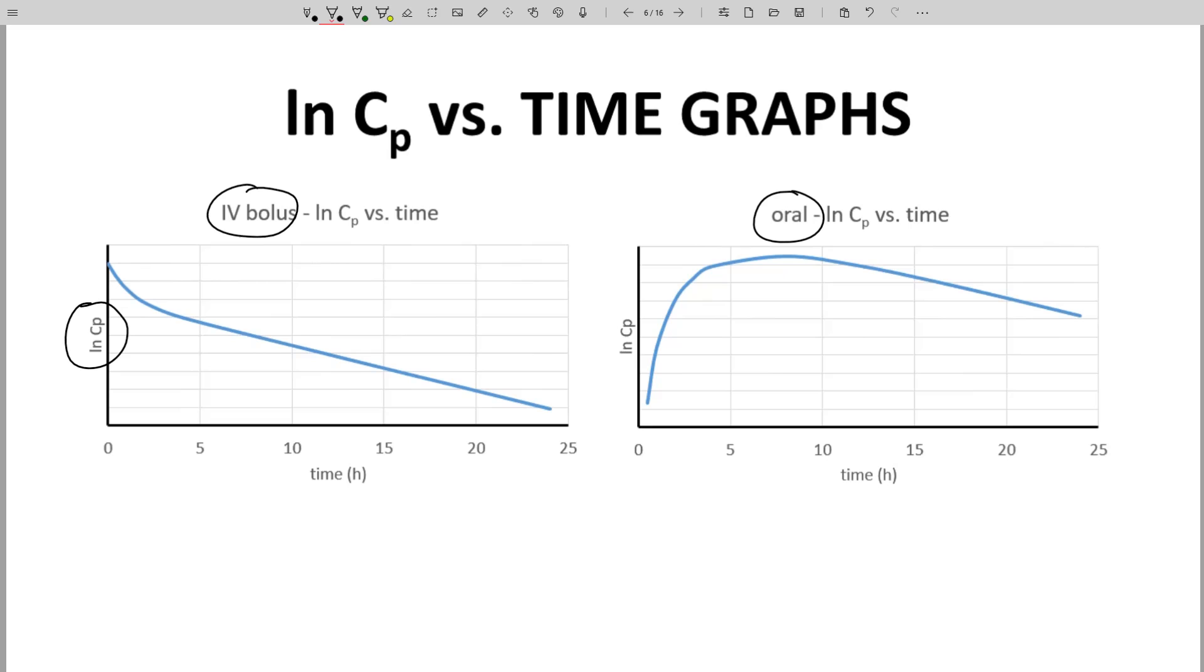In this form, the data look a bit more similar in that the latter half of both curves provide a straight line. Both lines have approximately the same slope. We'll see why this is important in a later video.